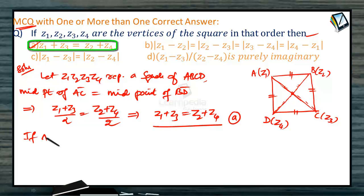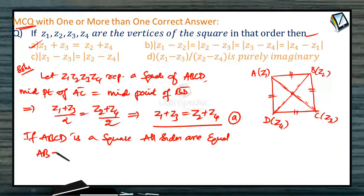Now, if ABCD is a square, what we can take is ABCD is a square when all sides are equal. Then we will get AB equals BC and CD equals DA. So, when all sides are equal, the length AB is got by Z2 minus Z1 mod.